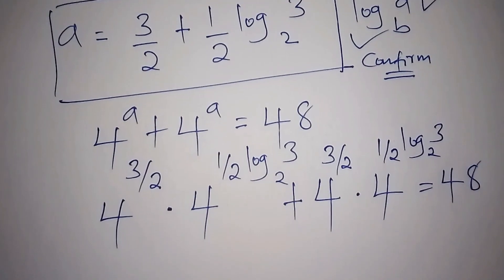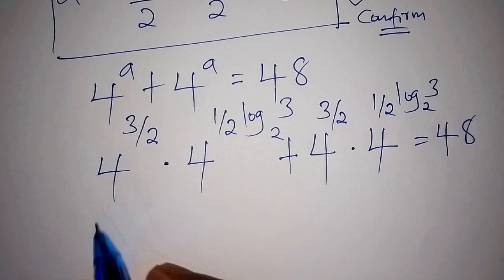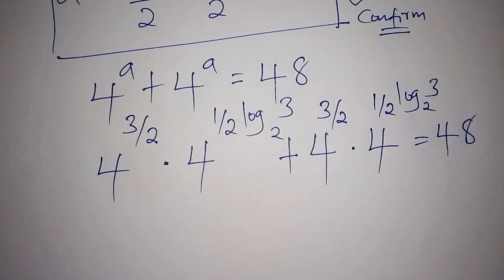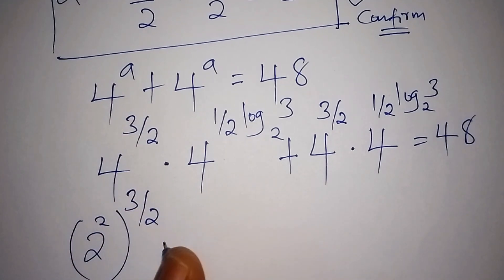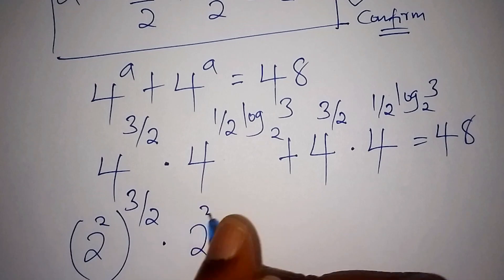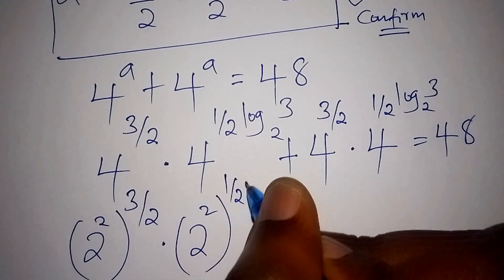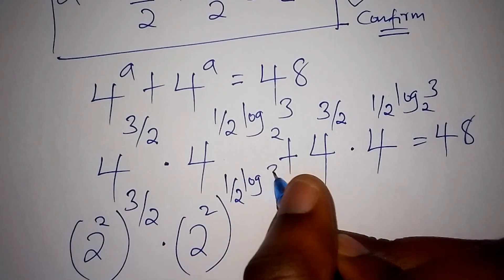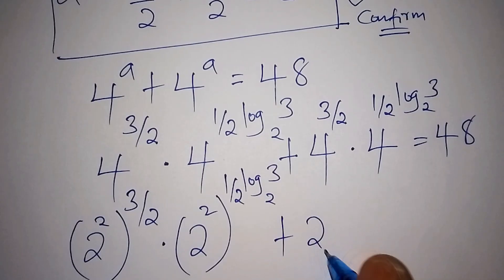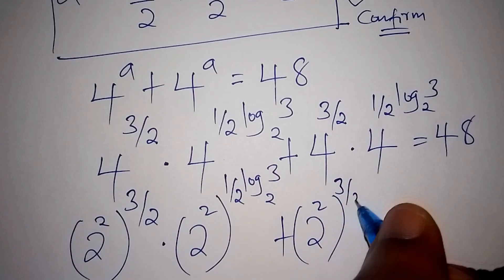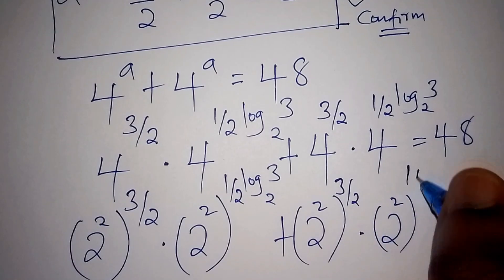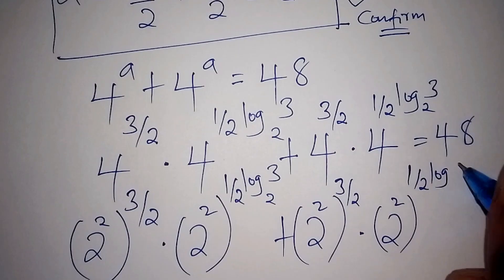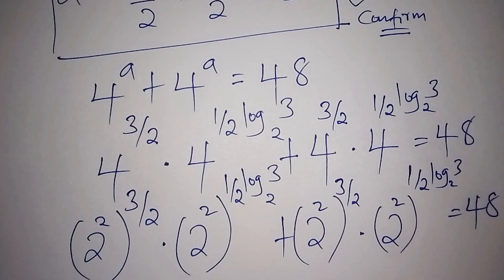Rewriting 4 as 2 squared: (2²)^(3/2) times (2²)^(½ log₂3), plus (2²)^(3/2) times (2²)^(½ log₂3) equals 48. The exponents multiply: 2³ times 2^(log₂3), plus 2³ times 2^(log₂3) equals 48.